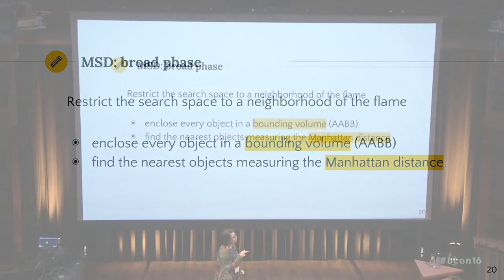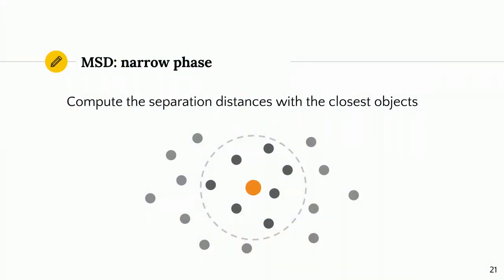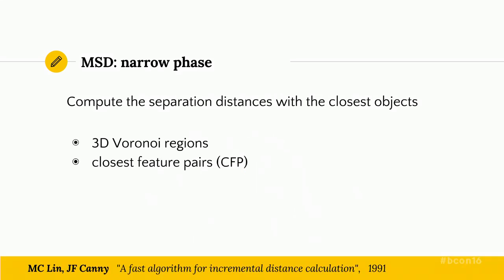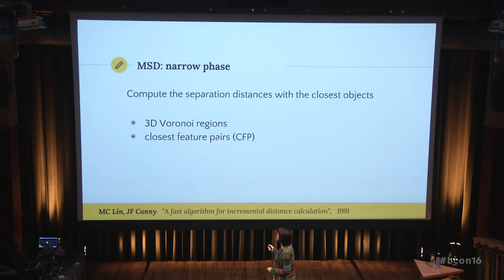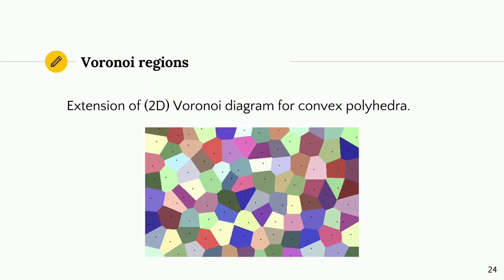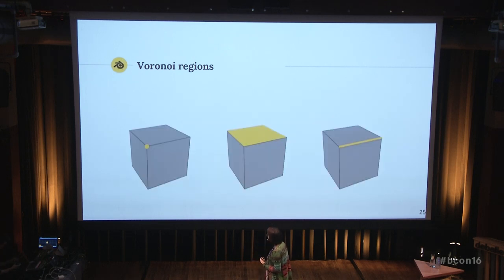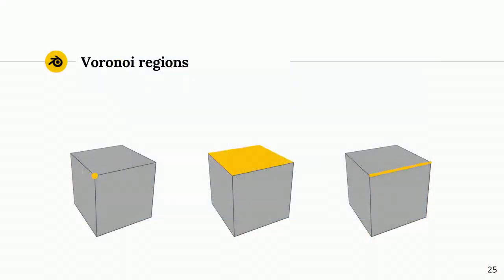As we saw for the particle system, each object in the refinery is wrapped inside a bounding volume. Distances between this kind of bounding volume are easily estimated using the Manhattan distance. For all objects selected in the broad phase, the actual computation of separation distance is done in the narrow phase. The computation of minimal separation distance is based on two concepts first introduced by Lin and Kenny: 3D Voronoi regions used in the computation of the closest feature pair of two objects. In the picture you see a standard 2D Voronoi diagram, which is a partitioning of a plane depending on points of the plane. A 3D Voronoi diagram instead is a partitioning of space depending on features of a 3D object. This is a visual example of a 3D Voronoi region, distinguishing three types of features: edge, face, and vertex.